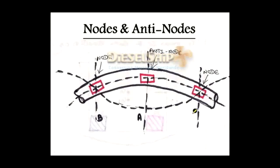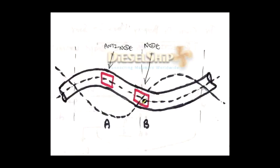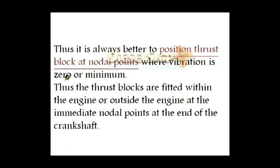Looking at the next picture: the node is the point of no or minimal vibration, and the anti-node is the point of maximum vibration. Therefore, the thrust block must always be placed at the nodes, not at the anti-nodes. It can be placed at any of the nodal points along the shafting system. It is always better to position the thrust block at nodal points where vibration is zero or minimum. If you fit the thrust block at an anti-node, the vibration is maximum and it will be subjected to huge stresses.